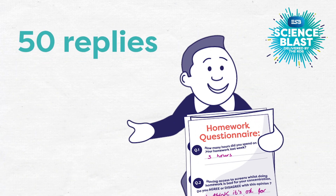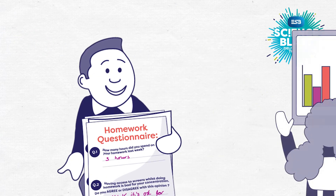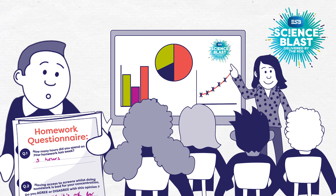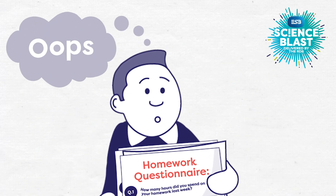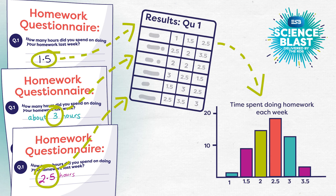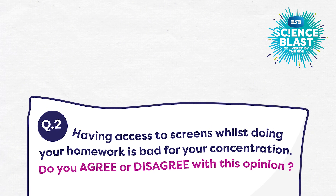Sean ended up getting 50 replies to the survey. He is delighted until the teacher asks if everyone can now show their results as a graph or a chart. They didn't think this through when they designed their questions. They've been lucky with question number one — nearly everyone gave him a number as an answer, so creating a table and a graph is going to be fairly straightforward. But for question two, they have got a problem.